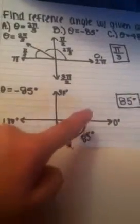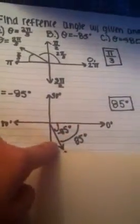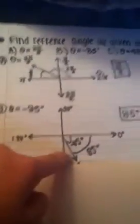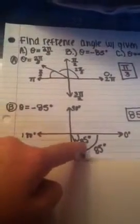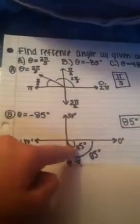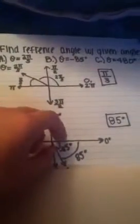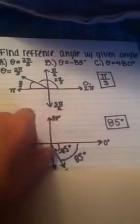So it would be negative 85 degrees this way. And in this particular case, the reference angle would be 85 degrees, because negative 85 degrees is actually the distance from the 180 line. So that would be 85 degrees, so the answer to that is 85 degrees.